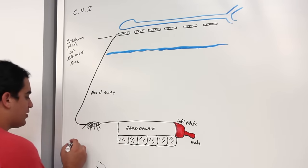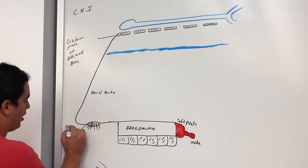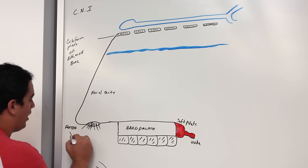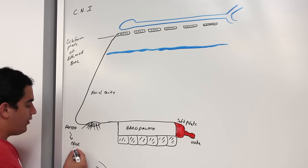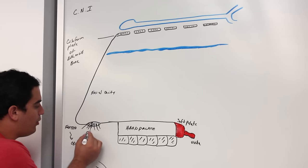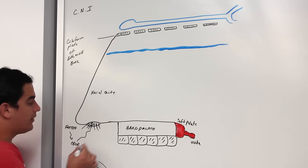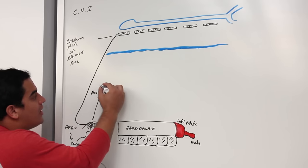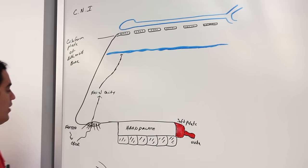Let's say I smell some type of odor — for example, a fart. That odor is going to move through the external nares, then into the nasal cavity. So this gas from the fart is going to travel that route.